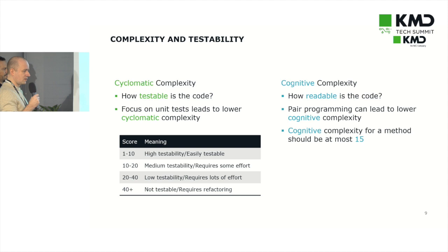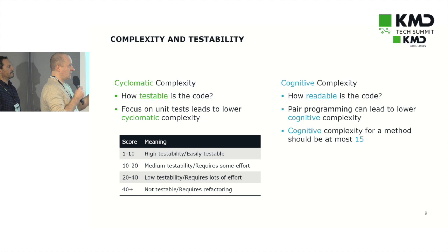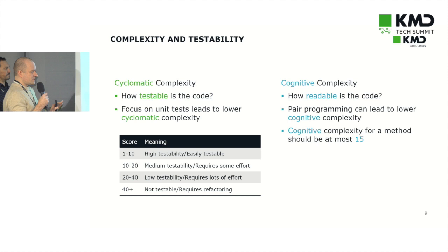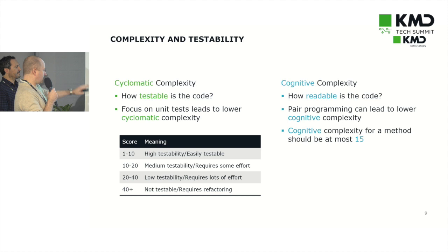For cognitive complexity, we would like to see a number of at most 15. These are numbers we have chosen — if they had been 20 or 30, it wouldn't mean that much. But it's just to have a baseline that we are aiming for.